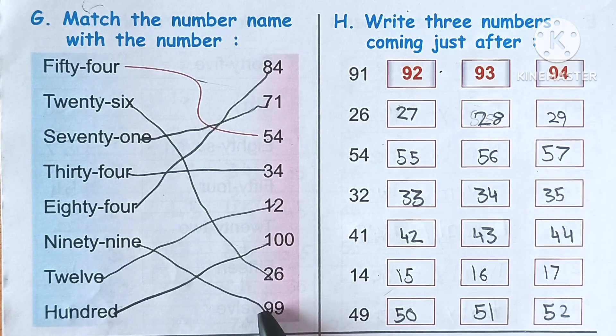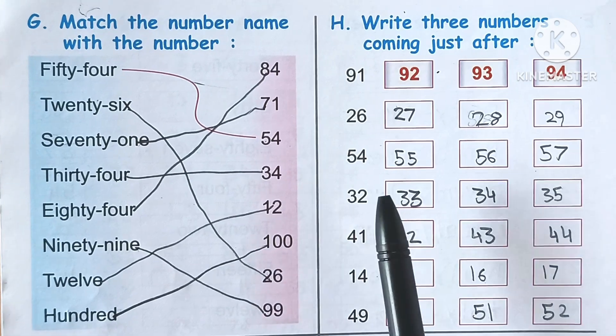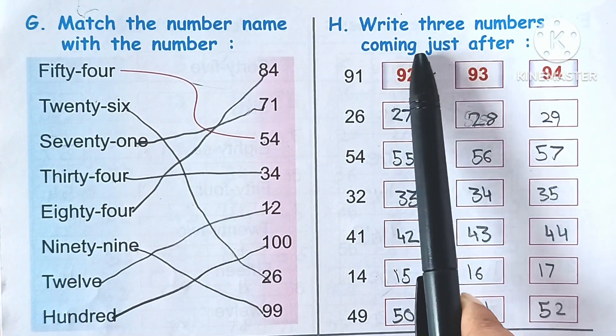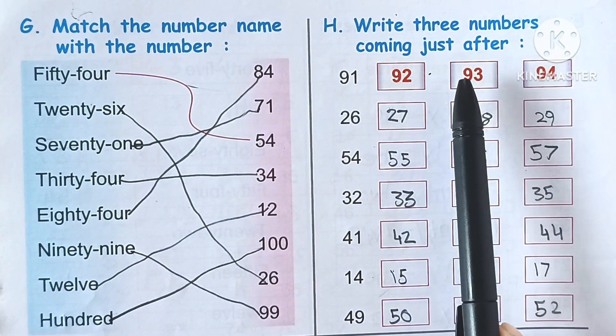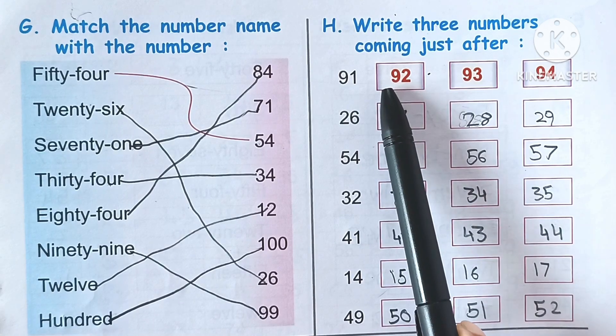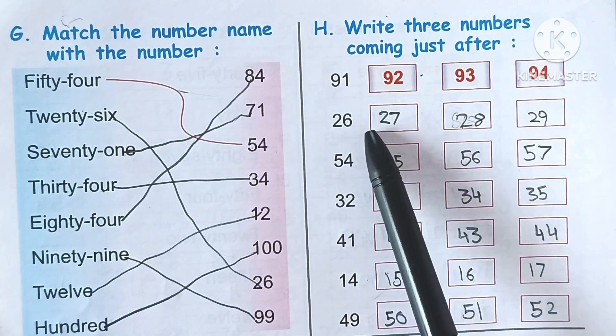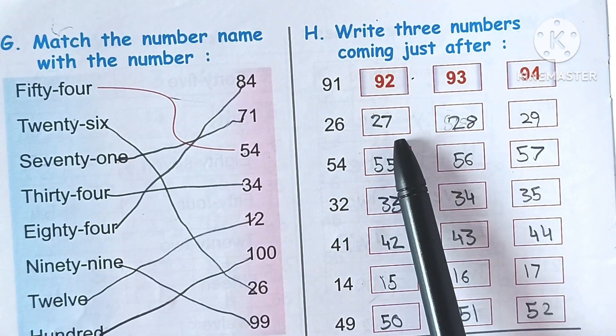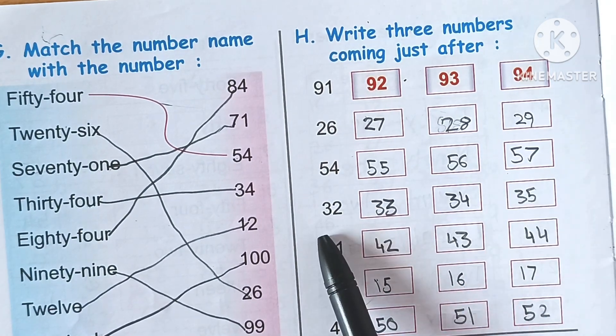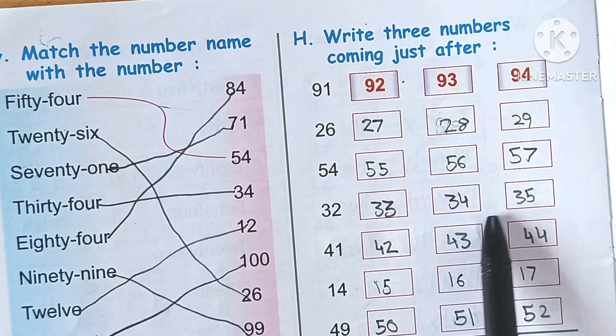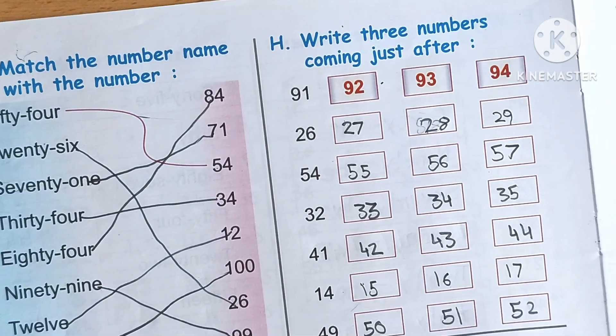Now next: write three numbers coming just after. This is a very easy question. For example: 33, 34, 35; 41, 42, 43, 44; 14, 15, 16, 17; and lastly 49, 50, 51, 52.